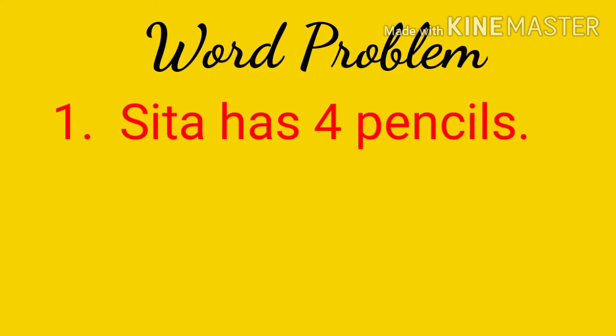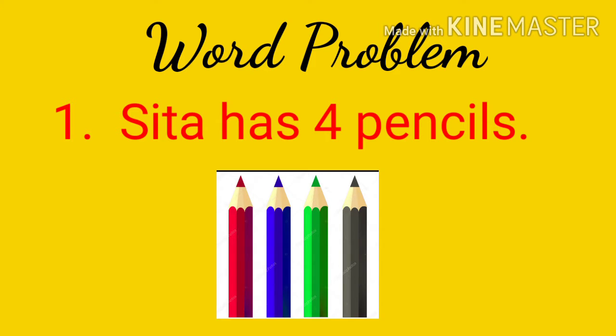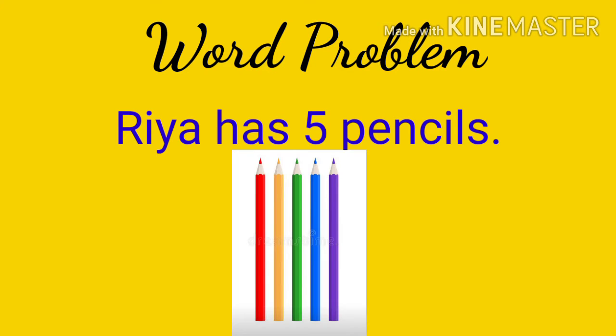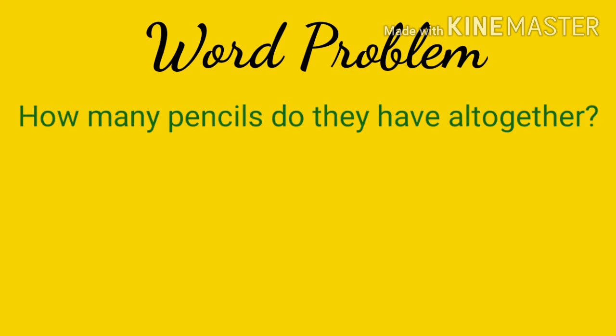Question number 1 was: Sita has 4 pencils. You can see here are 4 pencils, so Sita has 4 pencils. Rhea has 5 pencils — you can count these pencils, these are 5 pencils. Now you have to tell how many pencils do they have all together?